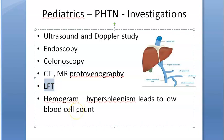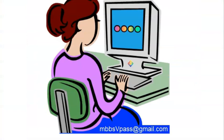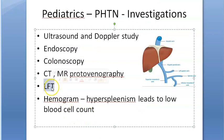LFTs are done to check liver function — if the liver is not functioning, the patient can have jaundice, ascites, edema, and hepatic encephalopathy. Features of cirrhotic portal hypertension include spider angiomata, palmar erythema, and gynecomastia. Elevated liver enzymes indicate a liver problem, helping to differentiate intrahepatic from pre-hepatic causes.